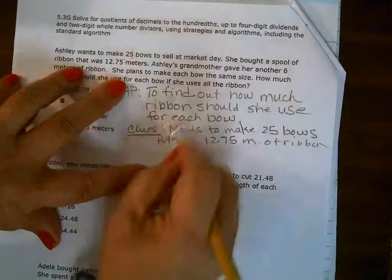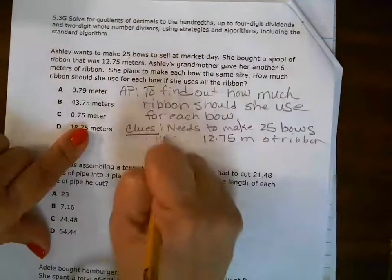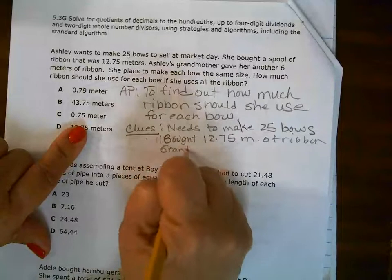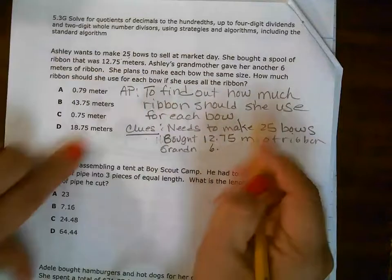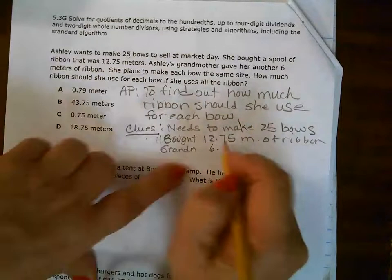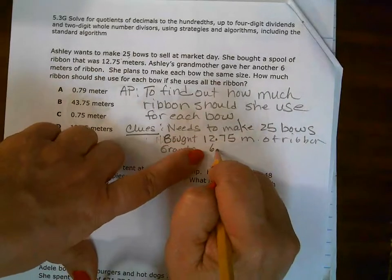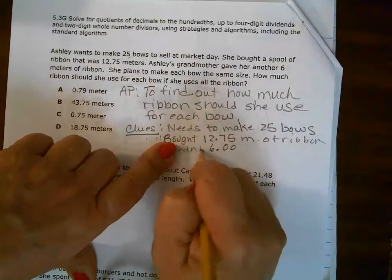So she's bought 12 and 75 hundredths meters of ribbon. So I'm just going to put bought because she went to the store to buy that. Then grandma gave her six more meters. Guys, be super careful next Tuesday. Okay. So you see how it's 12, six is a whole number. See that decimal?